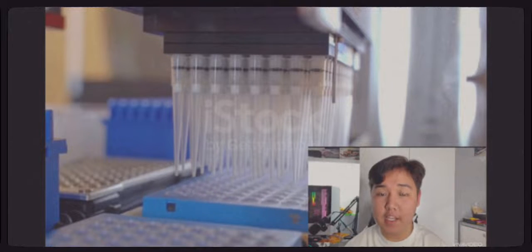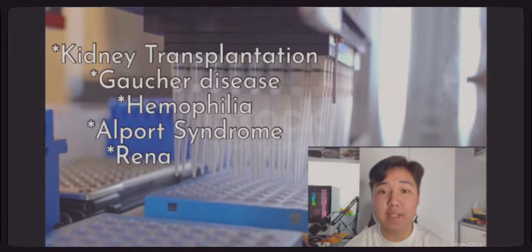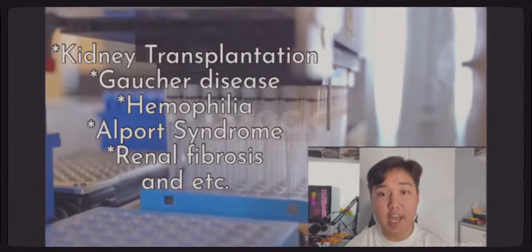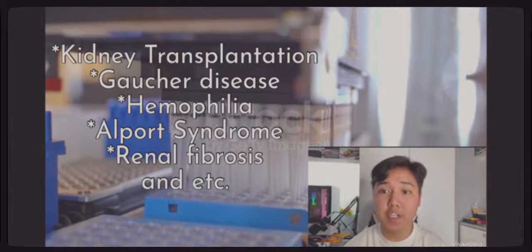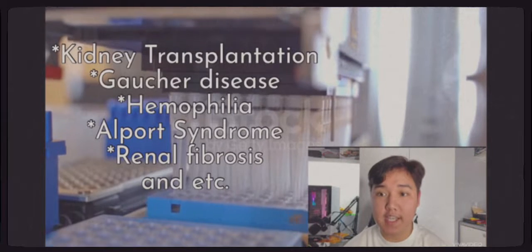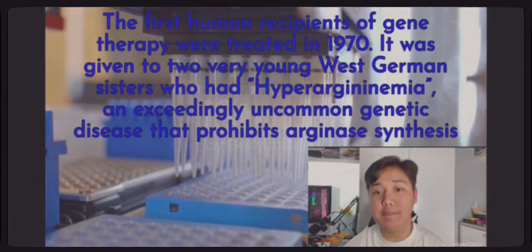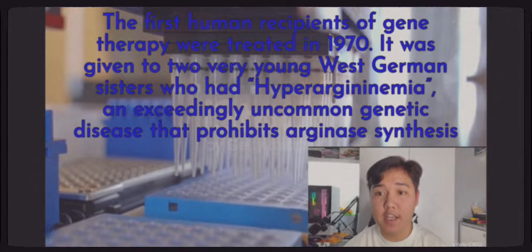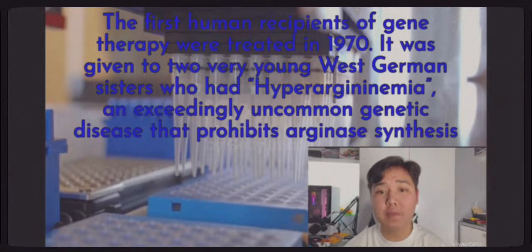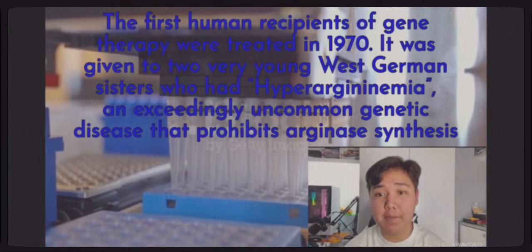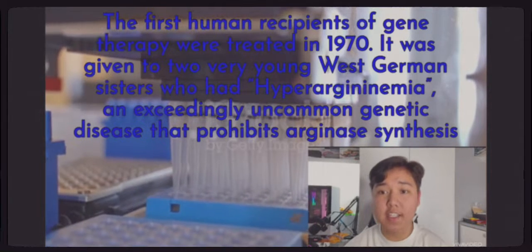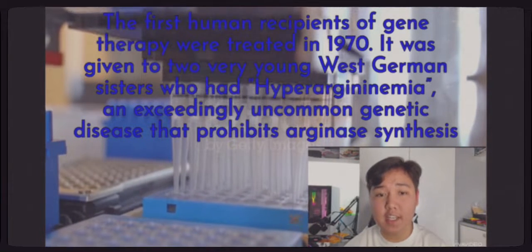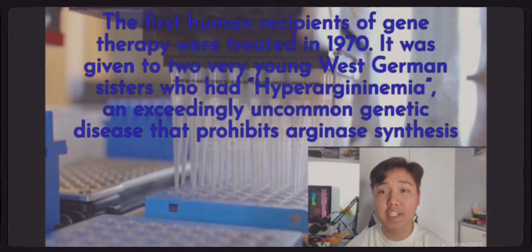Gene therapy's applicability also covers kidney transplantation, Gaucher disease, hemophilia, Alport syndrome, renal fibrosis, and a few other disorders. The first human recipients of gene therapy were treated in 1970. It was given to two very young West German sisters who had hyperarginemia, an exceedingly uncommon genetic disease that prohibits arginase synthesis.